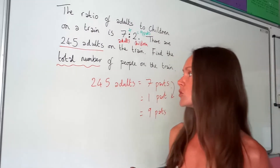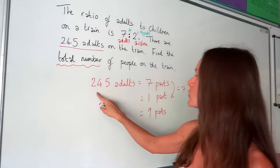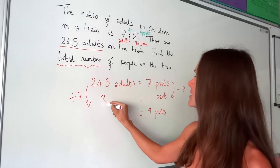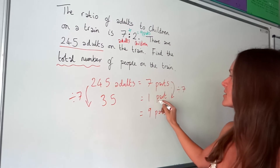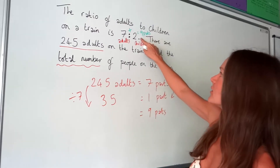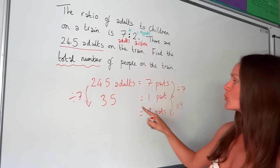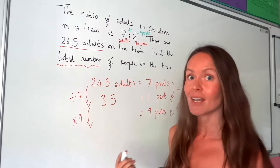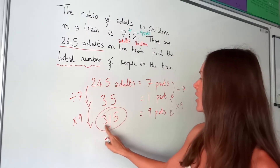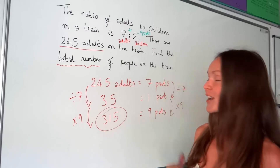If we've got seven parts and need to know what one part equals, we divide by seven - seven divided by seven gives one. So we divide 245 by seven, which gives 35. One part equals 35 people. The total is nine parts, so we multiply 35 by nine, which gives 315. The final answer is 315 people in total on the train.